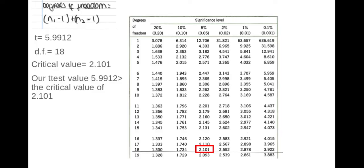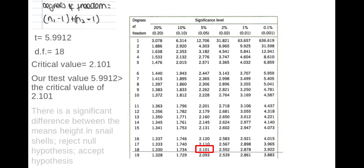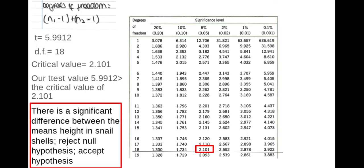So this is me comparing it so 5.9912 is greater than my critical value of 2.0101. Therefore there is a significant difference between the mean heights in snail shells between the two areas. I reject my null hypothesis and accept my hypothesis. It's really important that we state this bit and we also state this bit here and we also relate it to the actual data that we're talking about.